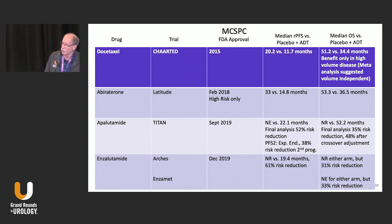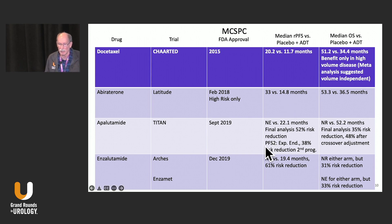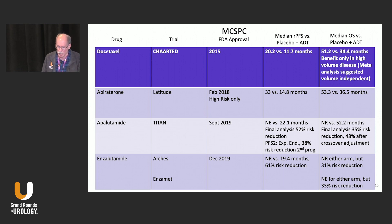Surprisingly, urologists were still a little shy because they didn't like the idea of having to order prednisone — it seems a little silly looking back on it. It wasn't until apalutamide and enzalutamide came along that there was broader utilization. Overall survival in the final analyses strongly supports superiority over ADT alone. I want to point out the PFS2 data with apalutamide: a 38% risk reduction after failure of first-line androgen pathway inhibitor, suggesting that being aggressive early on actually turns out to be better.